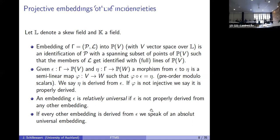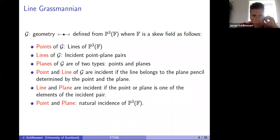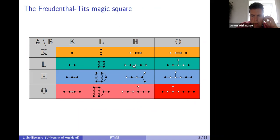Now I come to the geometries of the second row — the four varieties shown in green. These four are called the Severi varieties.